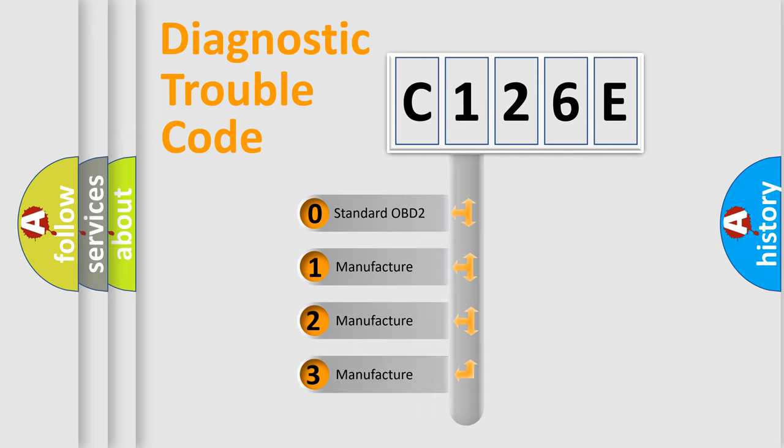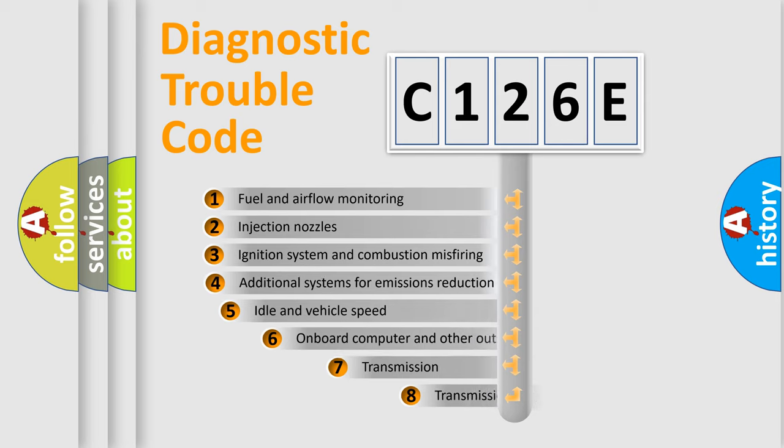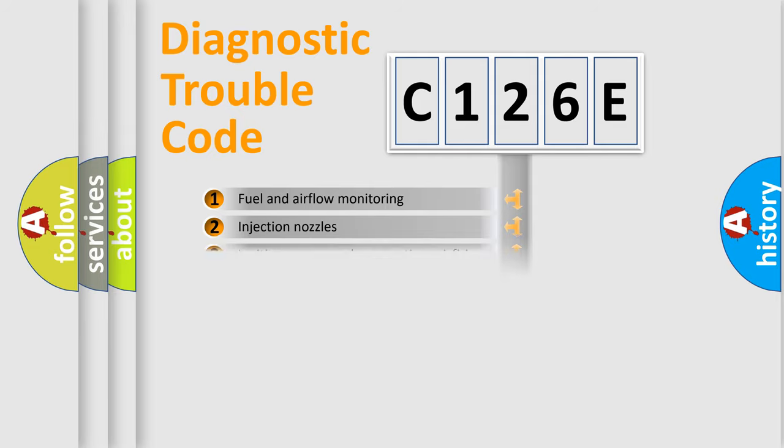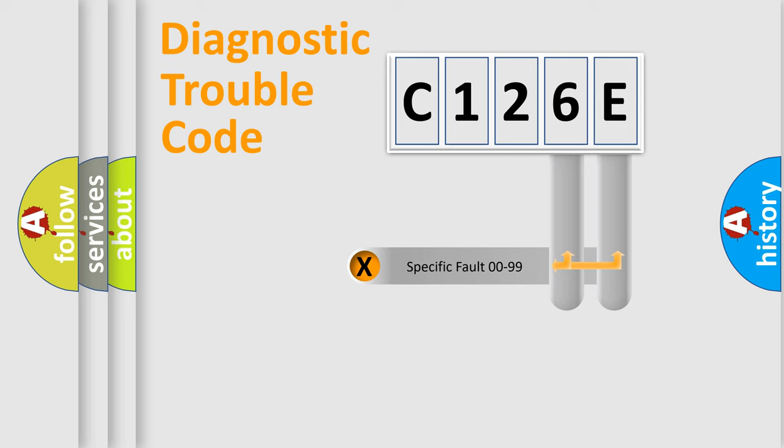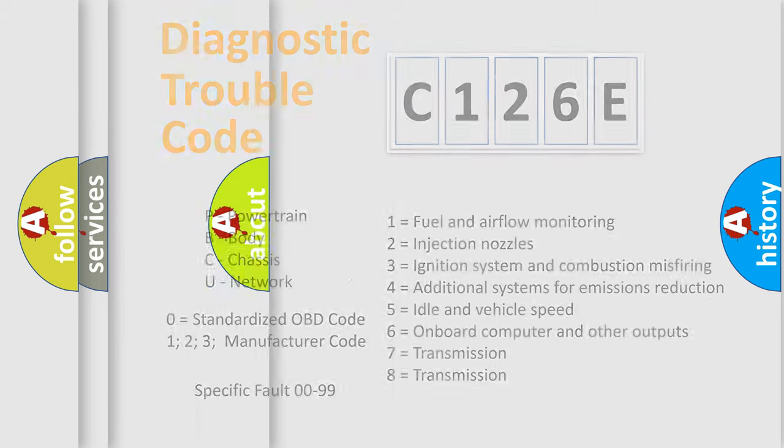If the second character is expressed as zero, it is a standardized error. In the case of numbers 1, 2, 3, it is a manufacturer-specific expression of the car-specific error. The third character specifies a subset of errors. The distribution shown is valid only for the standardized DTC code. Only the last two characters define the specific fault of the group. Let's not forget that such a division is valid only if the other character code is expressed by the number zero.